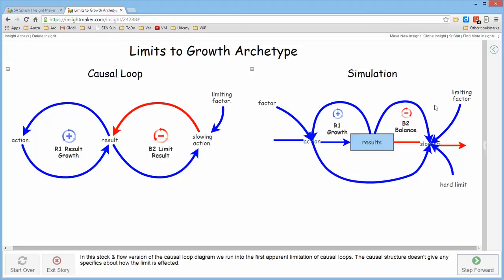It could be a limiting factor where as the result increases, the slowing action simply begins to slow the result though it continues to grow until it reaches some value and then there's actually a limit beyond which it doesn't increase, or it might be a hard limiting factor where once it reaches that limiting factor it can't go above the limiting factor.